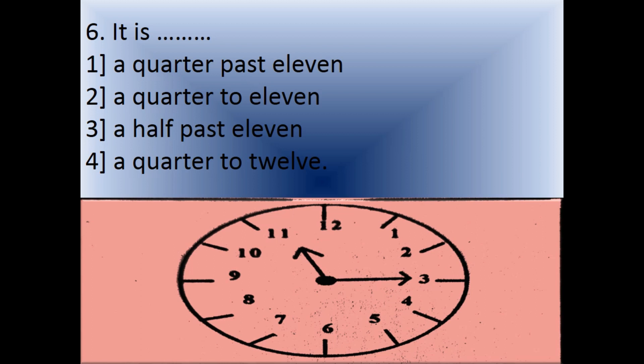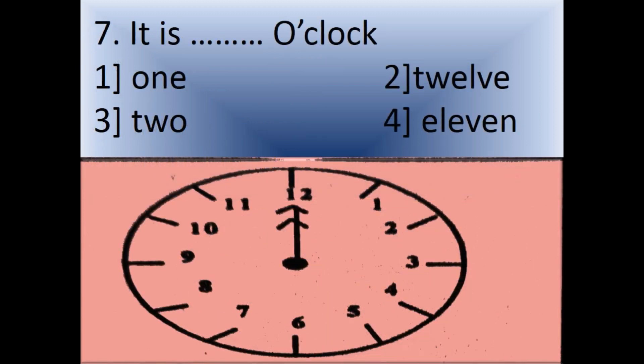Question 6: It is dash. Look at the clock, it is 15 minutes past the hour. How do we say this in English? Options: 1) A quarter past 11, 2) A quarter to 11, 3) A half past 11, 4) A quarter to 12. Yes, the right answer is a quarter past 11.